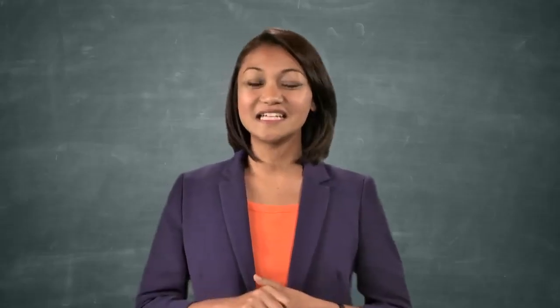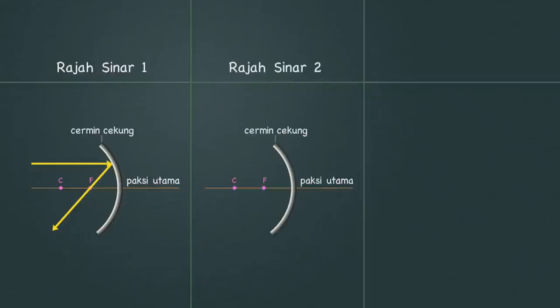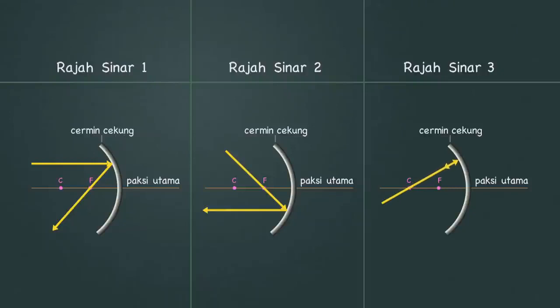Sekarang mari kita belajar ciri-ciri gambar rajah sinar pantulan pada sebuah cermin cekong. Rajah sinar satu: Apabila sinar tujuh datang selari dengan paksi utama, ia akan dipantulkan melalui titik fokus F. Rajah sinar dua: Apabila sinar tujuh datang melalui titik F pula, ia akan dipantulkan secara selari dengan garisan paksi utama. Rajah sinar tiga: Apabila sinar tujuh datang melalui titik C pula, ia akan dipantulkan semula pada garisan yang sama dengan laluan asalnya.